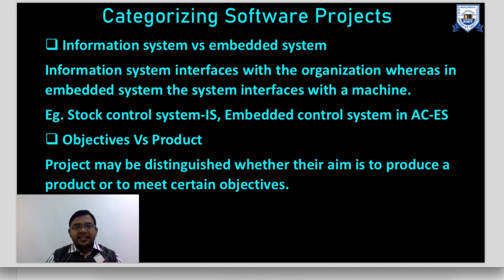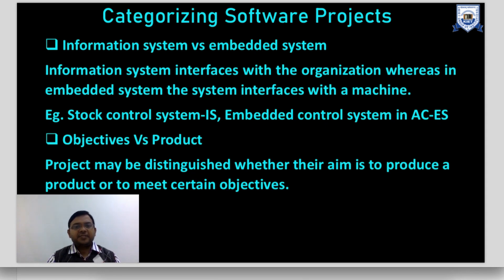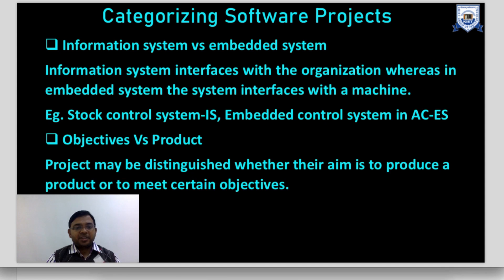Categorizing software projects: software projects may be categorized as information systems or embedded systems. An information system is general software that interfaces with the organization — for example, a stock control system. An embedded system interfaces directly with the machine — for example, an embedded control system in air conditioning equipment.